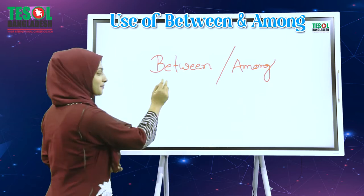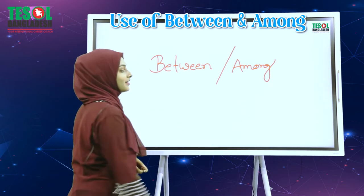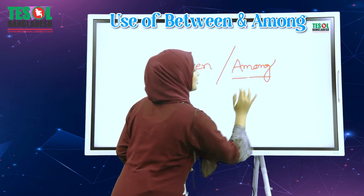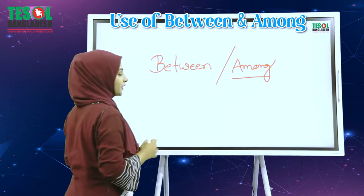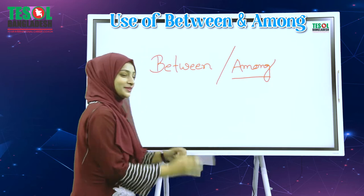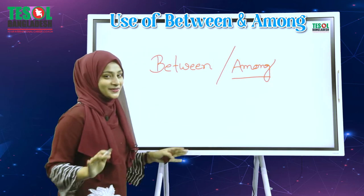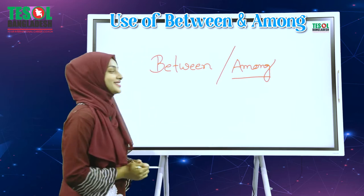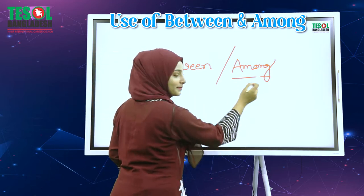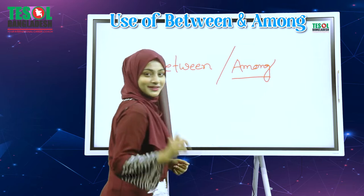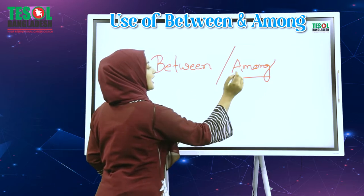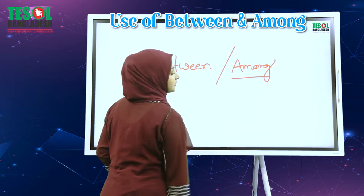So, aachke amra between and among-er babohatta shikbo. Amra ane keita 'amang' boli, so this is the wrong pronunciation. The right pronunciation is 'among'. So aachke amra between and among shikbo.